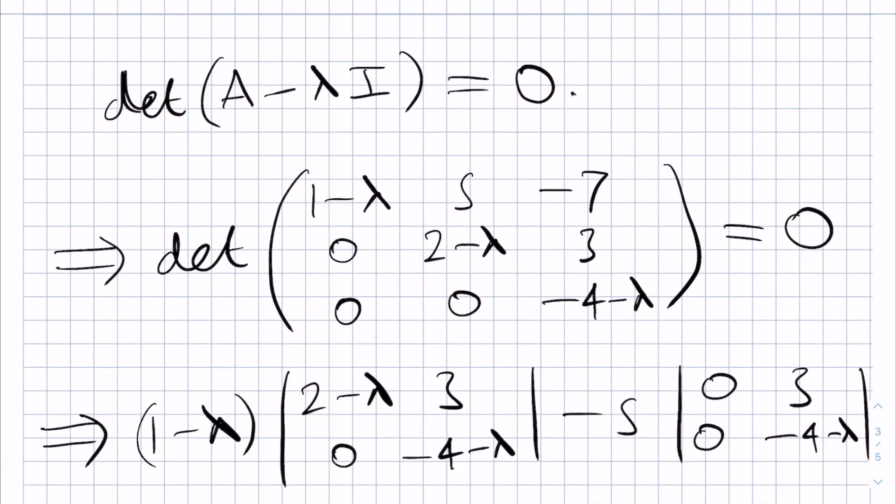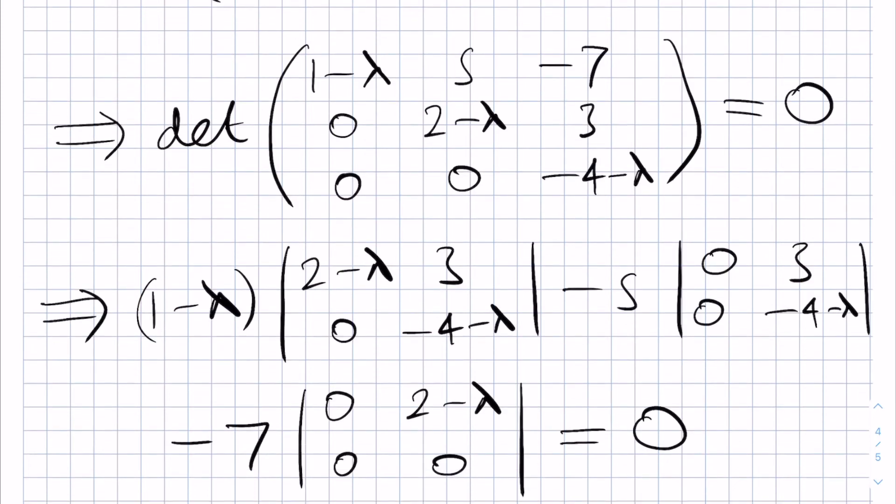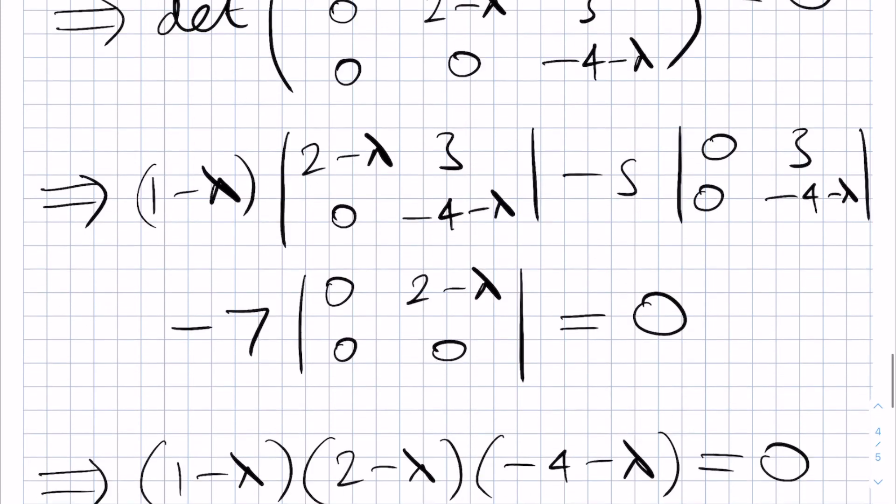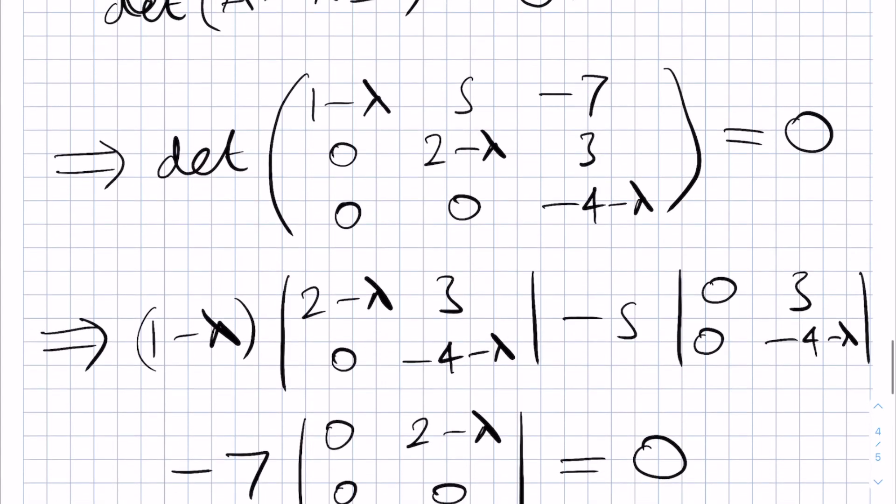These zeros that appear here end up giving us many terms in here being equal to 0. And so the only thing you get is this factor or rather this product here which is precisely this product here telling us that these terms here give us the eigenvalues.